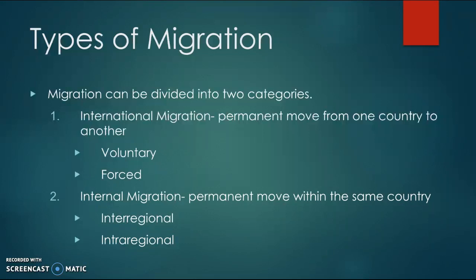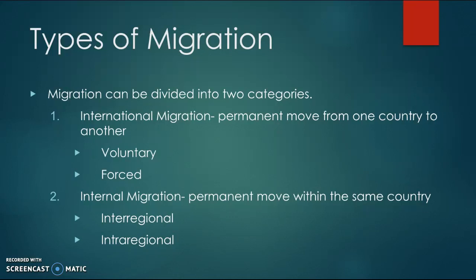The types of migration are international and internal. International migration is permanently moving to another country, and the motive is either voluntary or forced. Voluntary migration is your own decision — maybe better opportunities or family abroad. Forced migration, like the Trail of Tears under Andrew Jackson with Native American populations, involves pushing people off their land using force or violence.